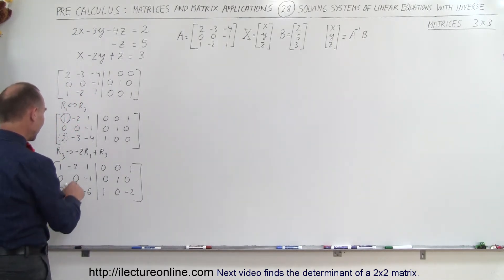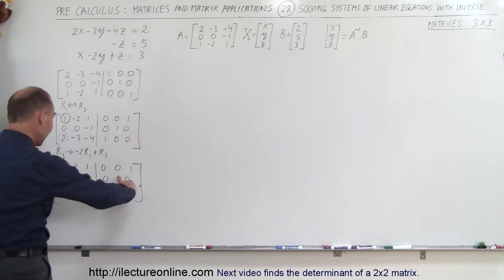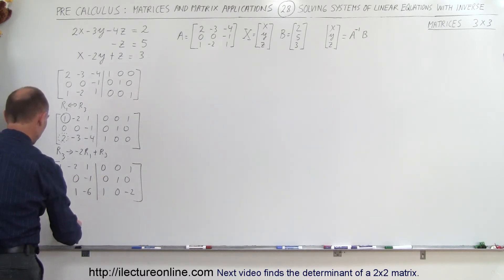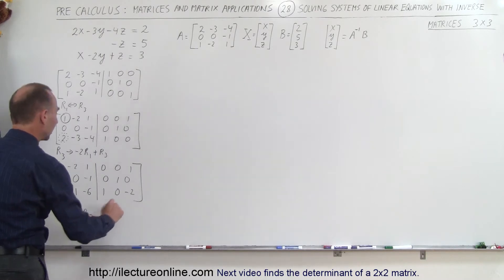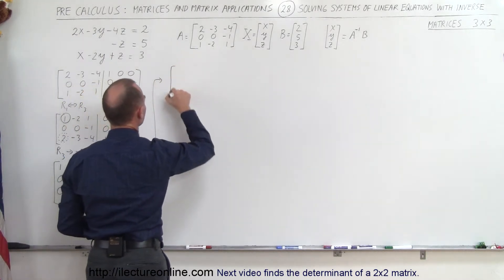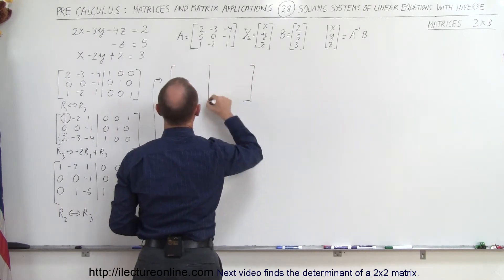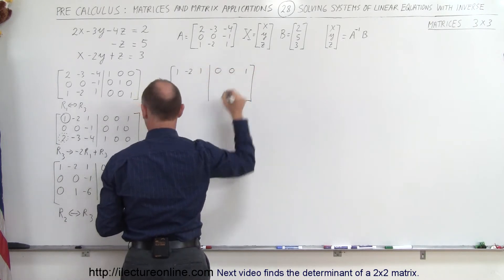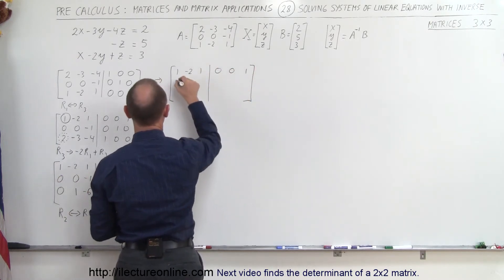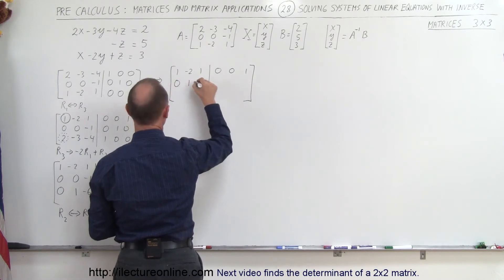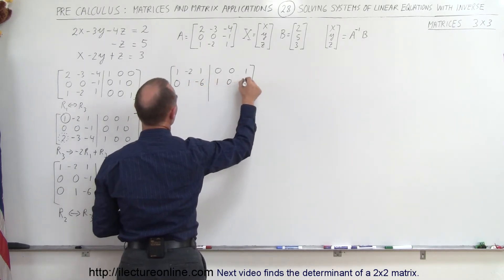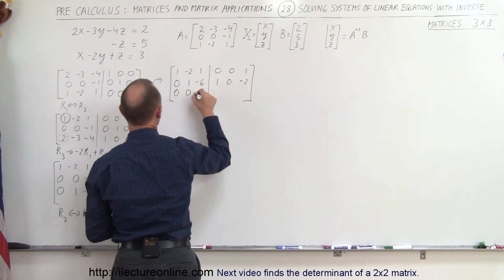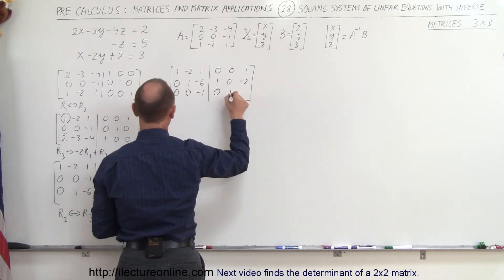Now the first column is taken care of. For the second column I need a 1 there, but I have a 0. So I switch row 2 and row 3 to put the 1 up there. Exchanging row 2 and row 3, row 1 stays: 1, -2, 1, 0, 0, 1. Row 3 becomes row 2: 0, 1, -6, 1, 0, -2. And row 2 becomes row 3: 0, 0, -1, 0, 1, 0.